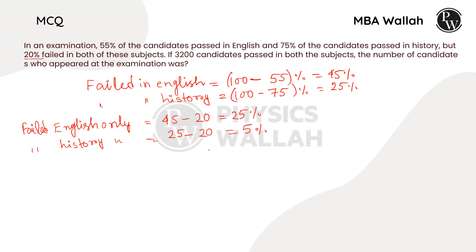In this case, total passed candidates is equal to 100 minus 25 minus 5%.